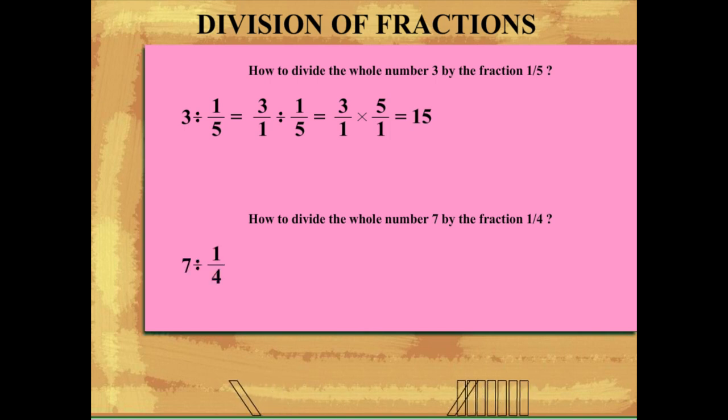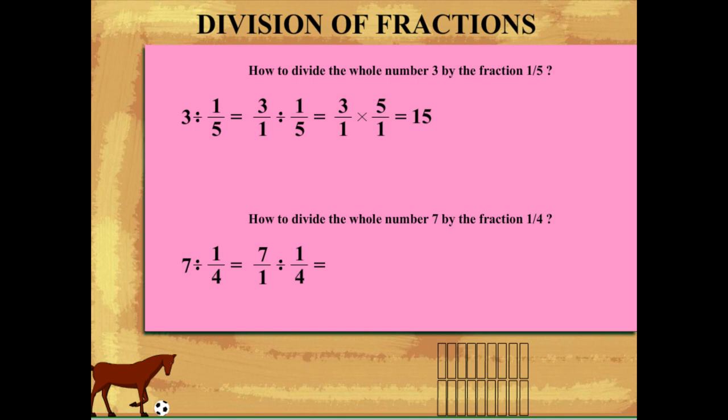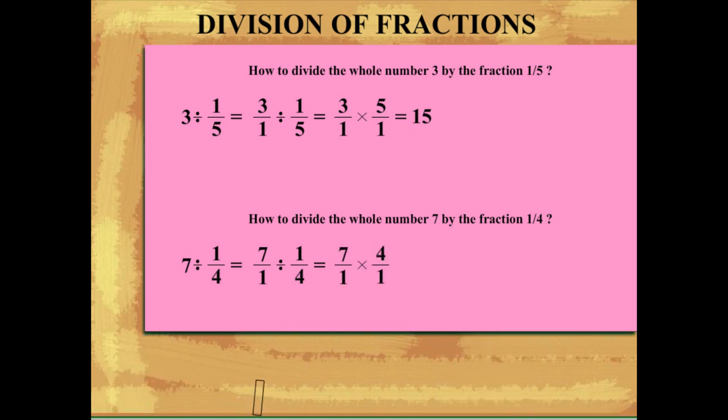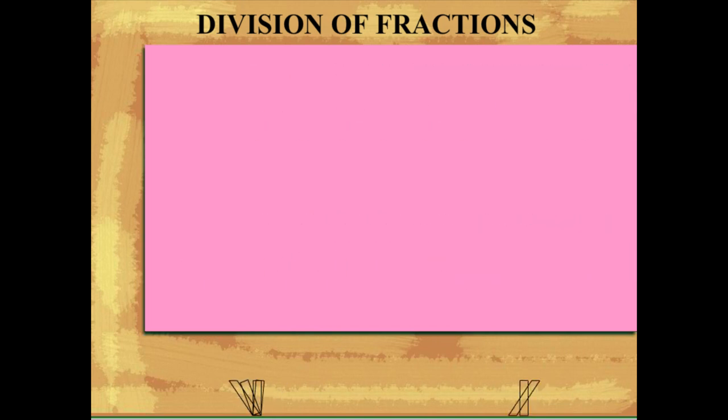7 divided by 1 upon 4 is equal to 7 upon 1 divided by 1 upon 4, is equal to 7 upon 1 into 4 upon 1. This gives 28 as the answer.